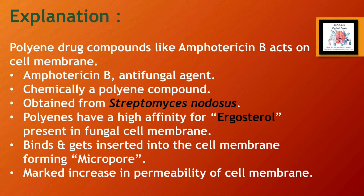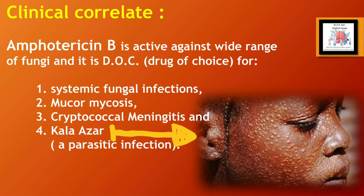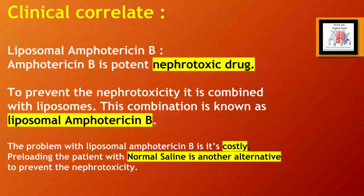Polyene compounds like amphotericin B act on the cell membrane. Amphotericin B is an antifungal agent obtained from Streptomyces nodosus and has a high affinity for ergosterol present in the fungal cell membrane. It binds and gets inserted into the cell membrane forming micropores. Its clinical correlations are: amphotericin B is active against a wide range of fungi and is the drug of choice for systemic fungal infections, mucormycosis, cryptococcal meningitis, and kala-azar.